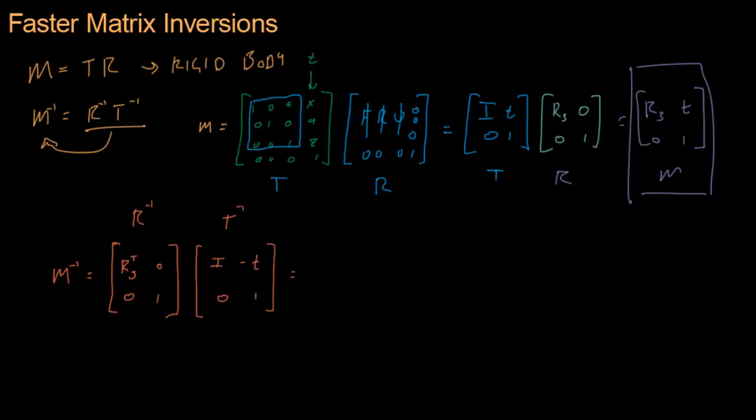So if we want to multiply these two bad boys together, let's see what we get. R3 transpose times I, that's just R3 transpose. So that was this row and this column. Now let's do this row and this column. That's R3 transpose times negative T. So negative T, I'm going to put this T here, and a negative T right there. And then this comes out to 0, 1.